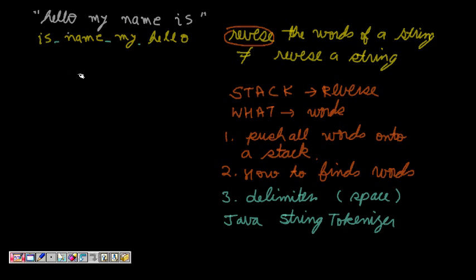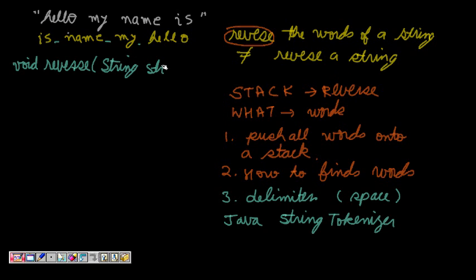So what we will do is: I will have a stack. Let me write it here. So we write: void reverse, and I pass the string str. Then we make a stack - Stack st = new Stack().